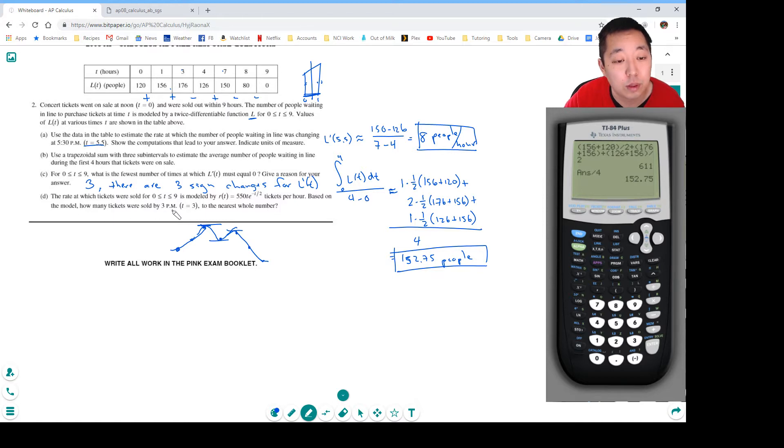The rate at which tickets are sold is modeled by 550xe to the negative x squared per hour. Based on the model, how many tickets were sold by 3 p.m. to the nearest whole number? To get the total number of tickets I integrate from 0 to 3. So we're going to do the integral of 550x e to the negative x squared, integrate over x from 0 to 3. That equals 973 tickets.